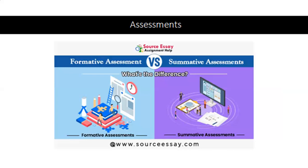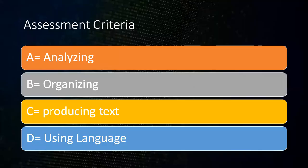Criterion A will remain analysis. Criterion B will remain organization. Criterion C is producing text. And Criterion D is using language. However, depending on the writing assessment and the expectation, you will be directly guided into what to write by the TSR, which is a task-specific rubric. Do not worry in terms of the assessment criteria — this will be explained in detail as we move on.